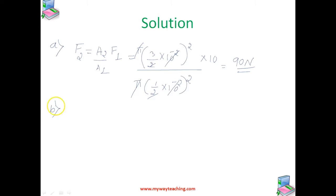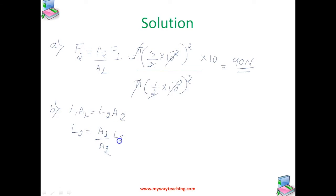Coming to the second part: if the smaller piston is pushed in through 6 cm, how much does the larger piston move out? Water is considered to be perfectly incompressible, so the volume covered by the movement of the smaller piston inwards equals the volume moved outwards by the larger piston. We can write L1·A1 = L2·A2. To find how much the larger piston moves out, L2 = (A1/A2) × L1.